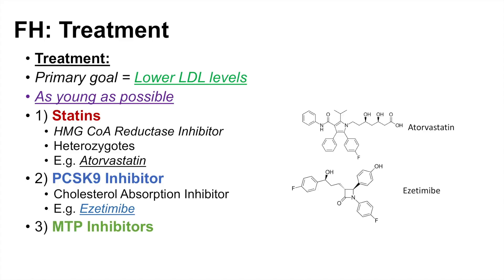Another class of medications used to treat FH is MTP inhibitors, which are typically used in homozygous individuals — usually a statin plus an MTP inhibitor. That was a lesson on familial hypercholesterolemia. If you found this video helpful, please like and subscribe for more videos like this one. Thank you for watching.